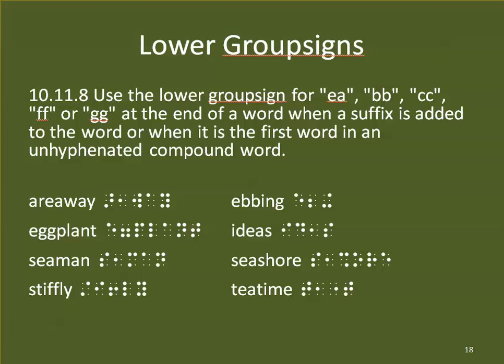Use the lower group sign for EA, BB, CC, FF, or GG at the end of a word when a suffix is added or when it is the first word in an unhyphenated compound word. So 'area away' — normally we can't use EA after 'area' at word's end, but with 'areaaway' the EA is now between two letters and we can use it. Same for 'eggplant' — GG is between two letters. Seaman, stiffly — suffix added. Ebbing — suffix added. Ideas — made plural. Seashore and teatime use the EA contraction.